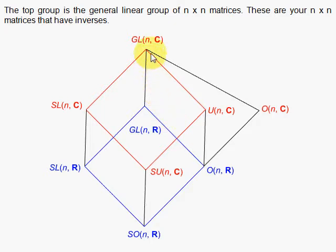The general n-by-n matrix over the complex field, where the matrix has an inverse in each case—those matrices form a group, and we call that the general linear group of n-by-n matrices, here over the complex field.